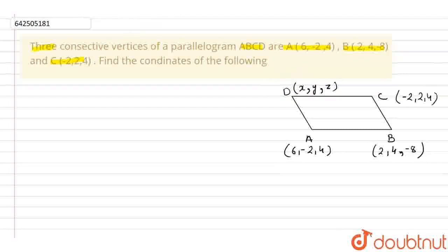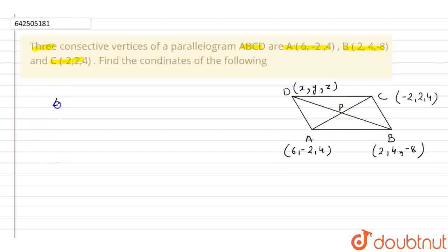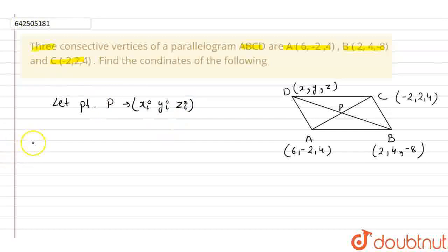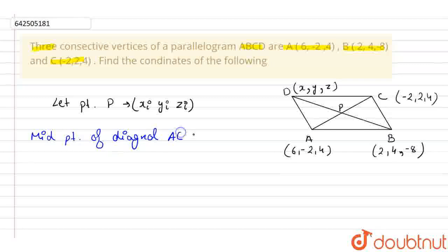Now, we will draw the diagonals of this parallelogram. The first diagonal is AC and the second diagonal is BD, and we will mark the point where they intersect as P. Let this point P be (XI, YI, ZI). The midpoint of diagonal AC will be equal to P, because the diagonals of a parallelogram bisect each other.